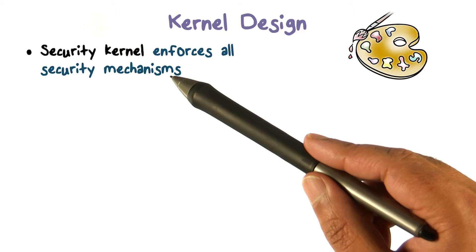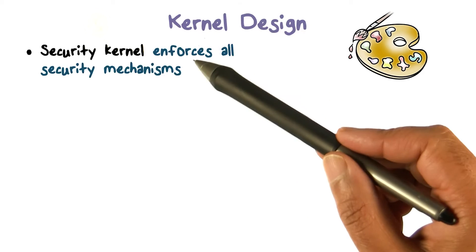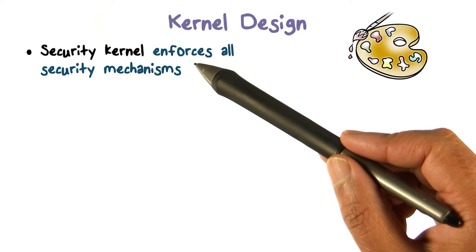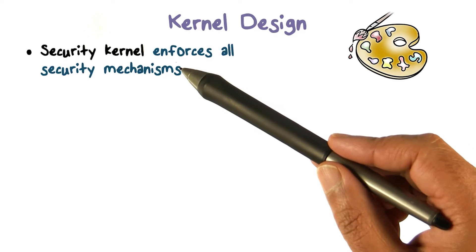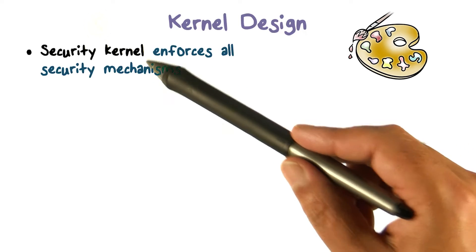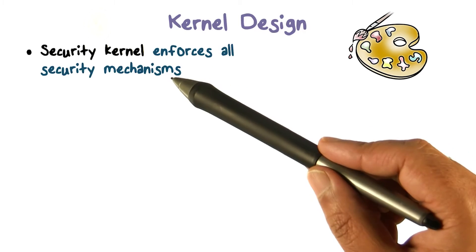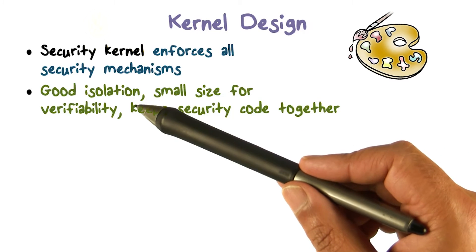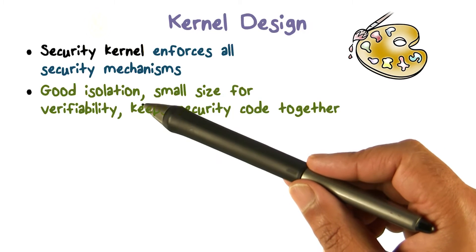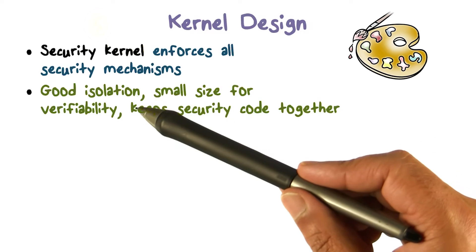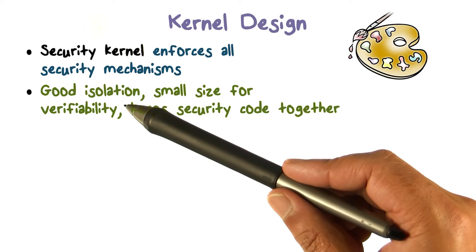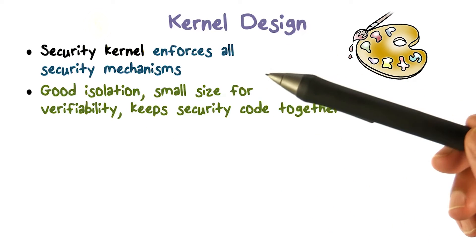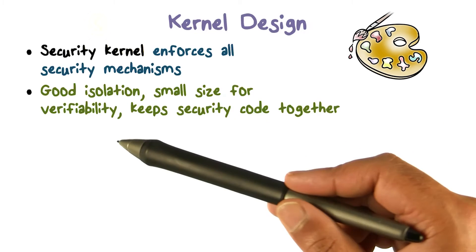This kernel is where the security mechanisms have to be enforced. The security kernel is at the center of the core. It has to enforce anything to do with security. Although it's at the center, it's small — it's just the kernel and not everything in a blob. Hopefully that helps with good isolation. Small size is good for verifiability.